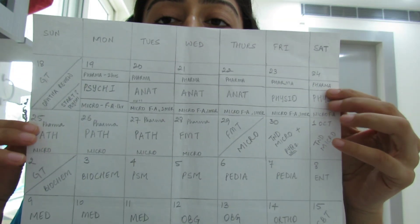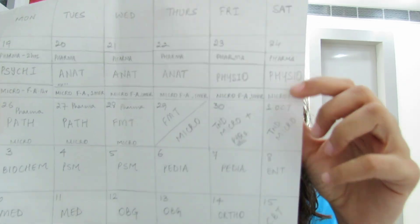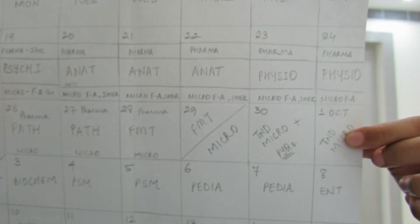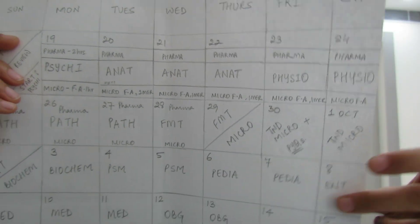Once you've joined a TND, the coaching will provide at least a one-month timetable. Take an A4 size paper and make boxes for each date of the month. On whichever date you have a TND, write the name — for example, TND Micro. That day you will not be able to study anything else because you'll be busy attending the class.